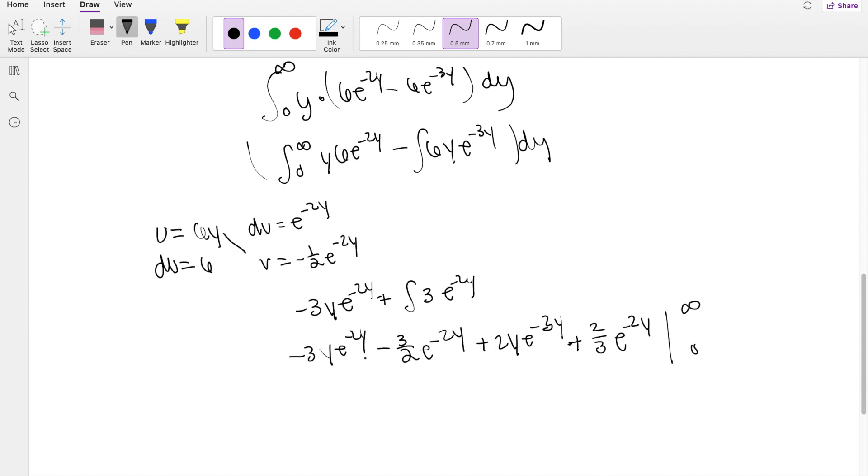Plugging in the upper limit, because e to a really big negative number is just all 0, so this is all 0 when you plug in infinity. When I plug in 0, this term is 0.